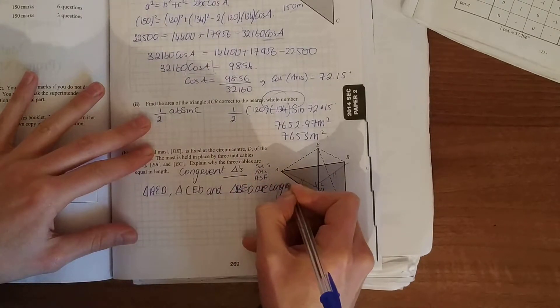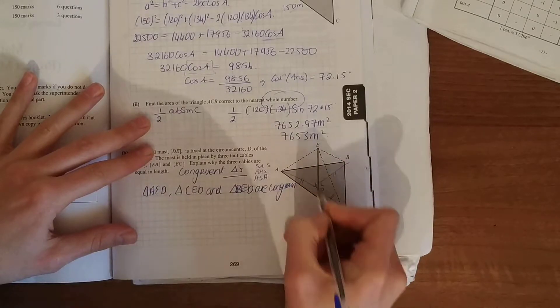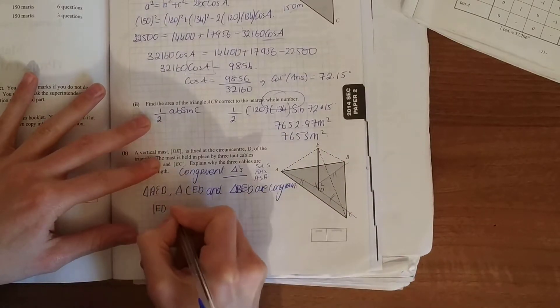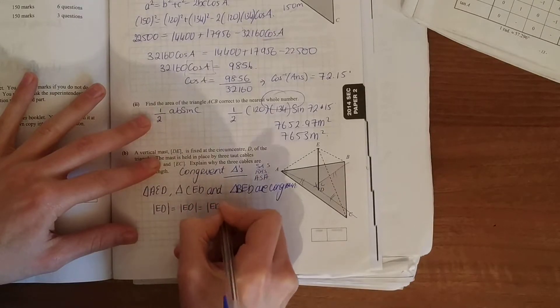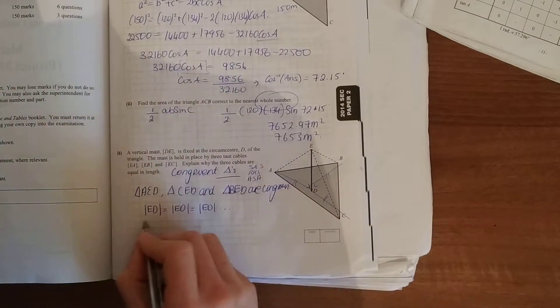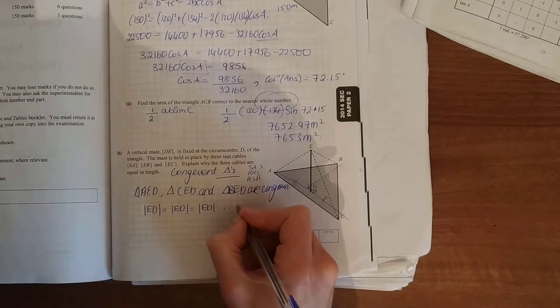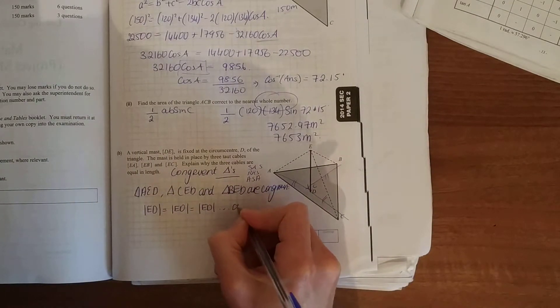And they're congruent because I can see straight away ED is equal to ED. It's a common side, obviously they're part of all triangles and it's the same side, so it must be the same length. Common side.